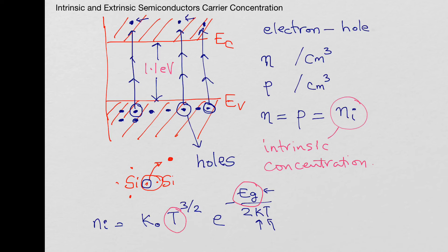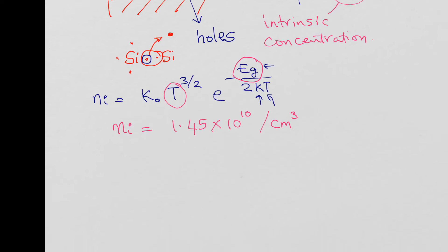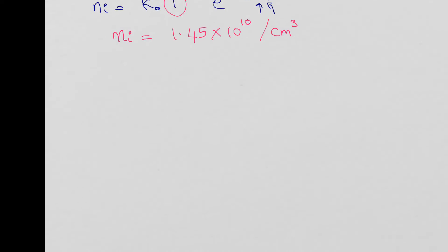As temperature increases, more electrons move into the conduction band creating more electron-hole pairs. At room temperature, which is 300 Kelvin or 27 degrees centigrade, ni is approximately equal to 1.45 times 10 to the power 10 electrons or holes per centimeter cube.